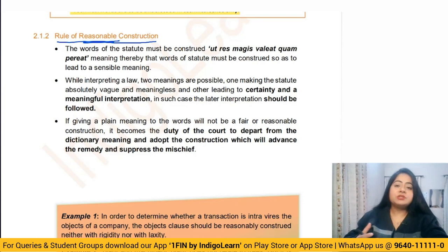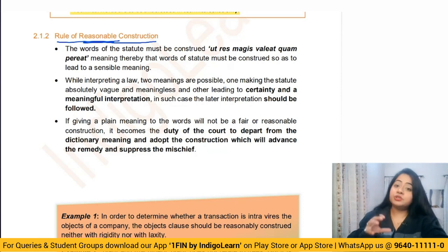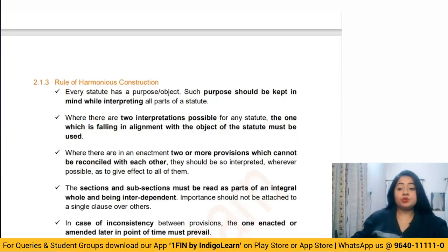The next rule is the rule of reasonable construction. Reasonable means that if the plain reading of the statute does not give an accurate result — if there are more than two interpretations possible or it does not suit the current circumstance — we have to be flexible and go beyond what is stated. We try to understand the intention of the lawmakers and why that particular statute was created, and based on that intention we construct the meaning. If two meanings are possible, one making the statute vague and the other leading to certainty, the second should be chosen.